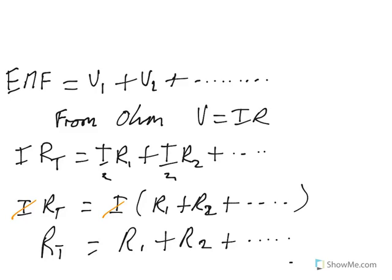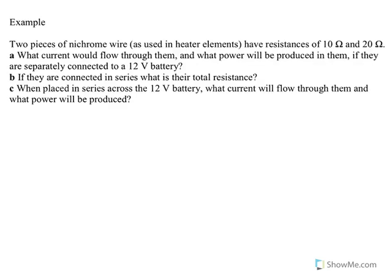In your notes there are gaps for that material. Refer to the notes on the website if you missed anything. Now let's look at a series circuit example. We've got two pieces of nichrome wire. Nichrome wire is used in heating elements because it heats up quite a bit before it melts. One has a resistance of 10 ohms, the other 20 ohms.